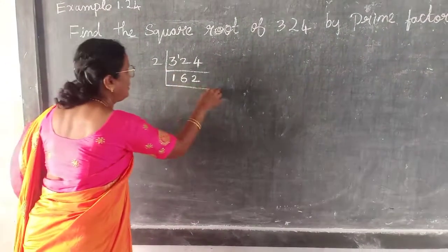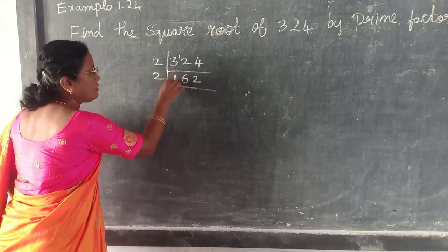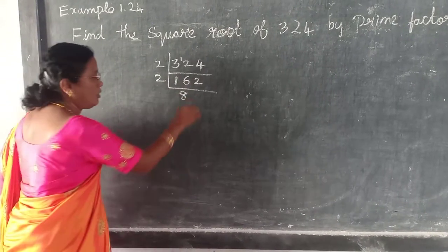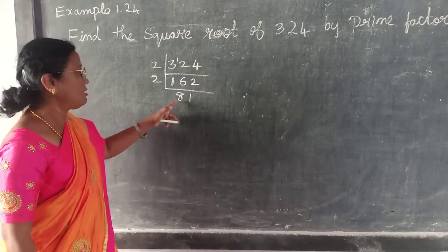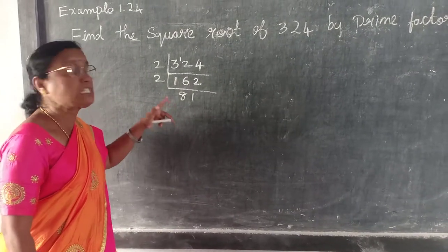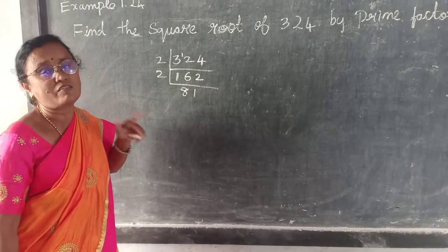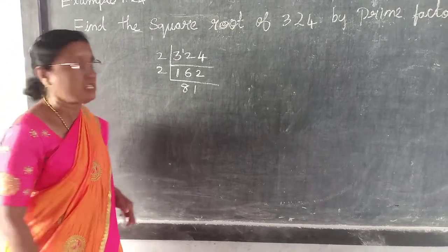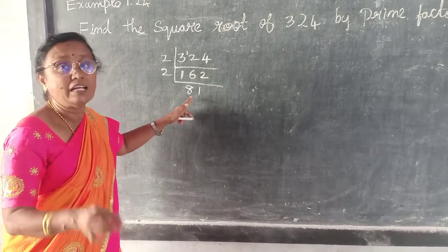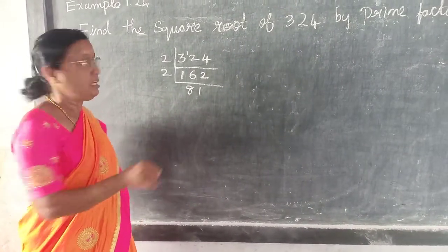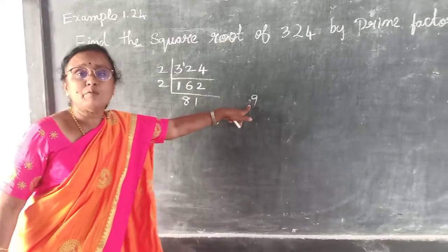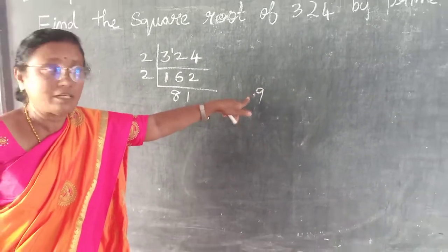Once again an even number. So what can you take? 2. It won't be divisible by 1, so you have to take 16 — 8 2's are 16. This is not an even number anymore, so let us go for the next. What is it? 3. Test of divisibility you should know — if it should be divisible by 3, you have to add these digits.